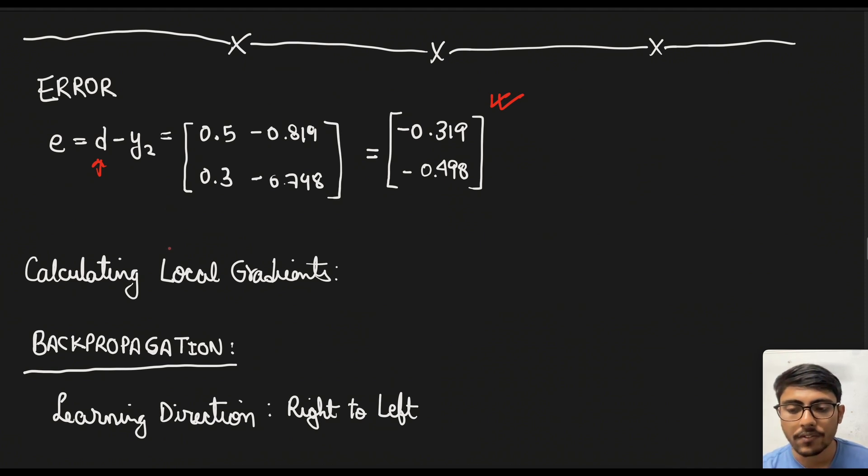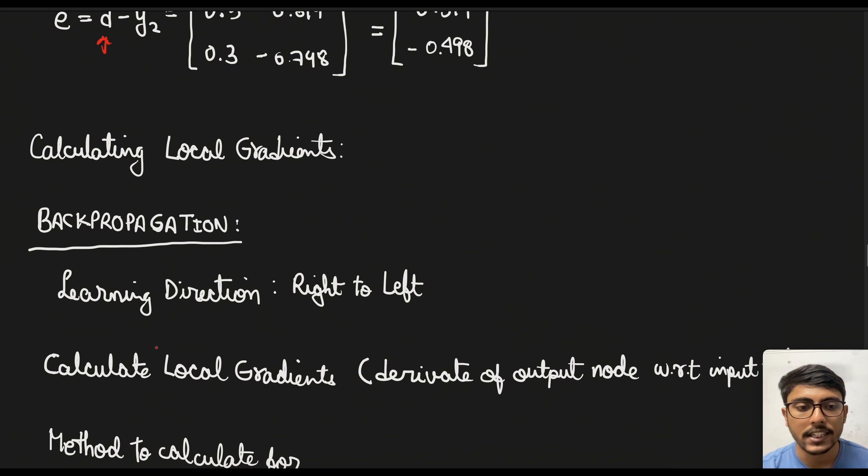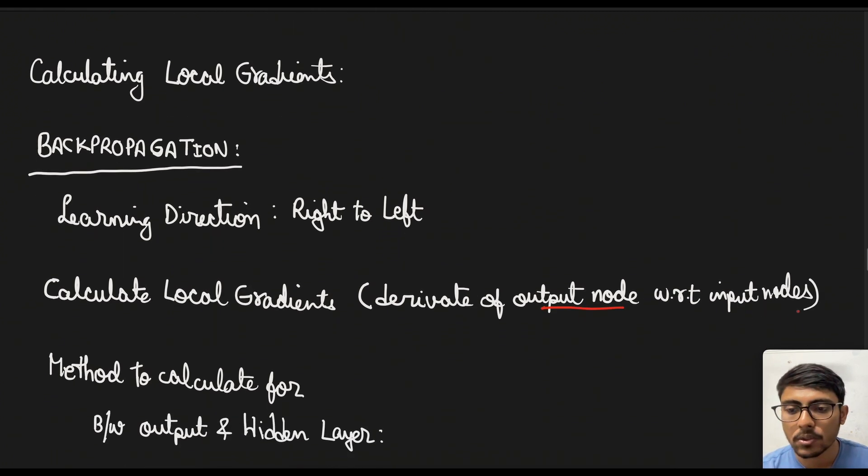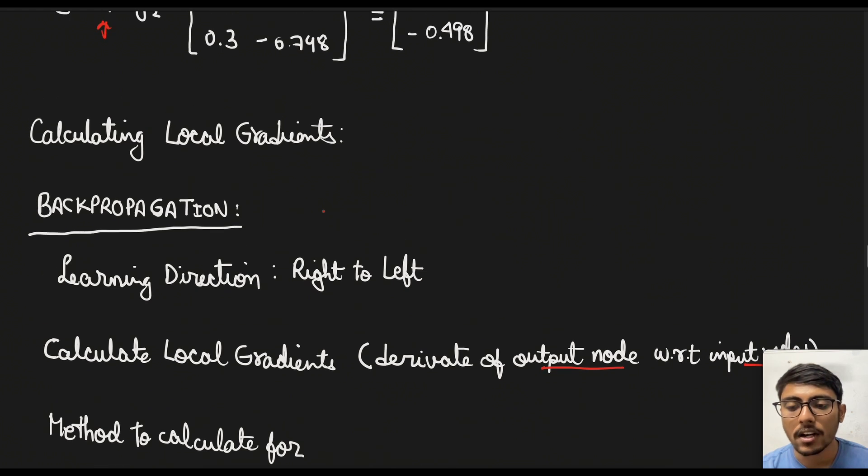And in that way we will be able to find the local gradients. Now local gradients are basically the derivative of output node with respect to the input nodes. As you can say that we are trying to change the weights which are basically an input to the neural network and it modifies the input in order to change the output that it will produce due to the external input.